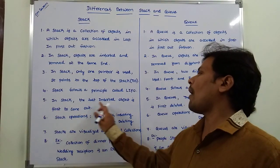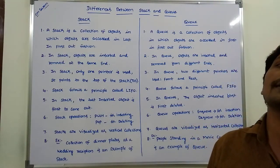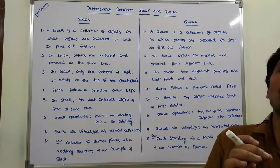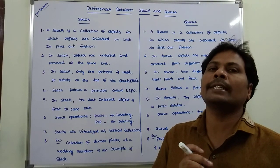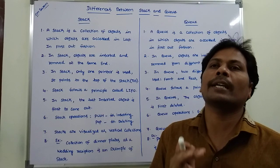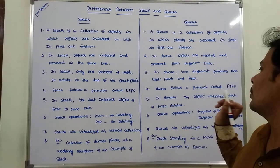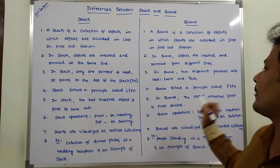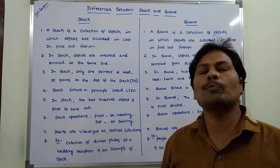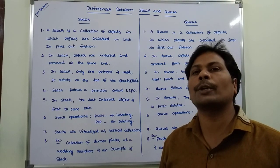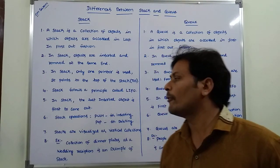In stack, the last inserted object is the first to come out — that means stack follows last in first out. Whatever object entered last, that object is removed first. In queue, the object inserted first is deleted first. Whatever object entered into the queue first, that object is deleted or removed from the queue first.